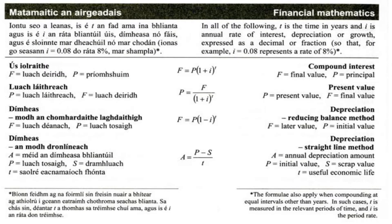We have some formulae in our log tables on page 30 — the heading is financial mathematics, so it's easy to find. The first formula we're going to look at is the compound interest formula: F equals P bracket one plus i to the power of t. It tells us F is the final value and P is the principal. I tend to refer to F as the future value and P as the present value, which makes it easier working through questions.